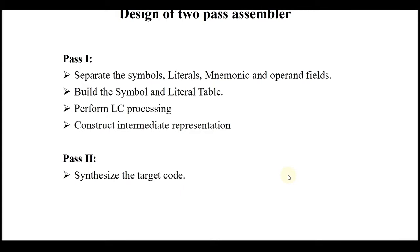For designing a two-pass assembler, we need different data structures for pass one and pass two. In pass one, we separate symbols, literals, and mnemonic operand fields using different tables. Second, we build the symbol table and literal table with proper data structures. Third, we perform LC (location counter) processing, assigning the location counter to every instruction, and construct the intermediate representation — generating intermediate code. In pass two, we synthesize the target code using the intermediate code, symbol table, and literal table to generate the final object code.